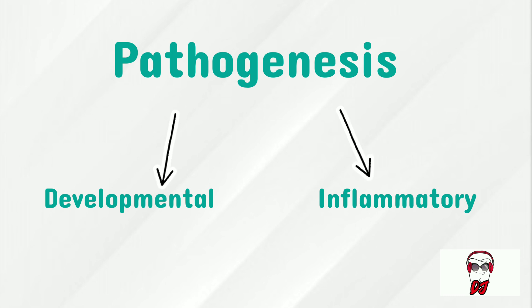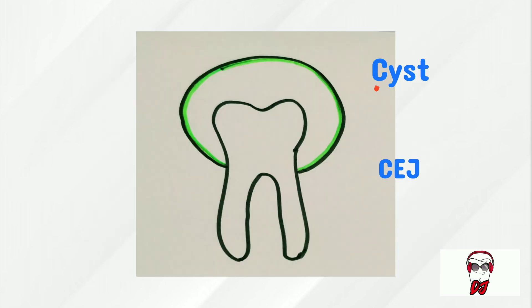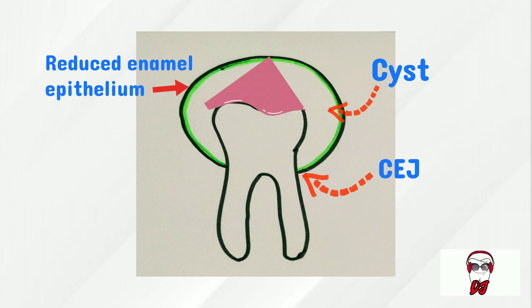Let's take a look at this picture. The green line represents the reduced enamel epithelium. As you can see, the space between the reduced enamel epithelium and the crown of the unerupted tooth has increased. Why is that so? It's due to the accumulation of fluid between the reduced enamel epithelium and the crown of the unerupted tooth at the cementoenamel junction, causing formation of me, dentigerous cyst.